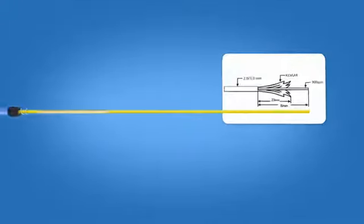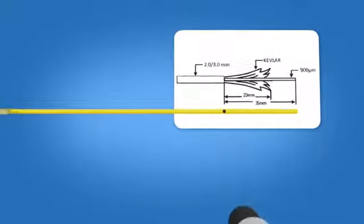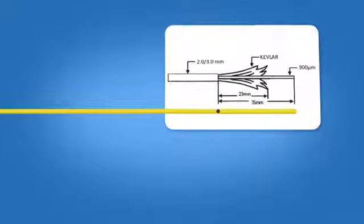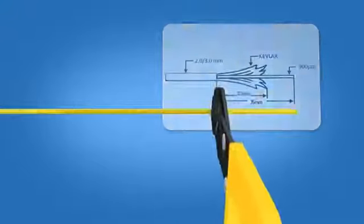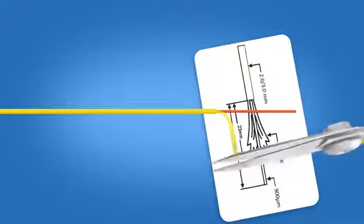Using the template on the front of the connector packaging, mark the cable at 35 mm from the end of the cable. Strip 35 mm of 3 mm jacket from the cable exposing the kevlar and 900 micron fiber. Cut the kevlar to a length of precisely 23 mm.